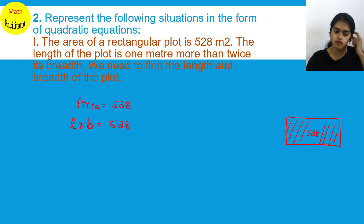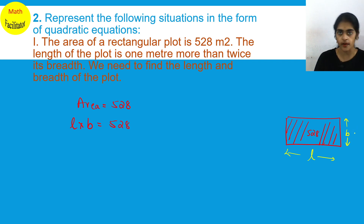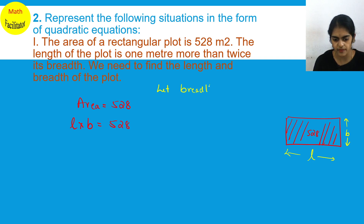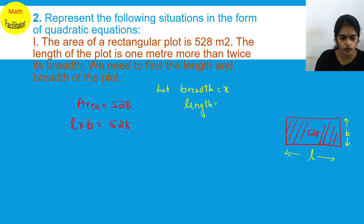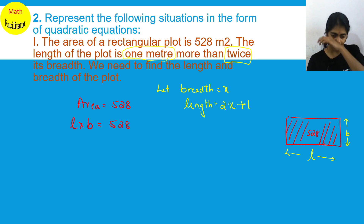The length of the plot is 1 meter more than twice its breadth. If I am taking L as the length and B as the breadth of the plot, and if I am taking breadth as X, then length is 1 meter more than twice the breadth. 1 meter more means you will add 1. Twice the breadth means 2 times the breadth, so 2 times breadth is 2X. Therefore length is 2X plus 1.